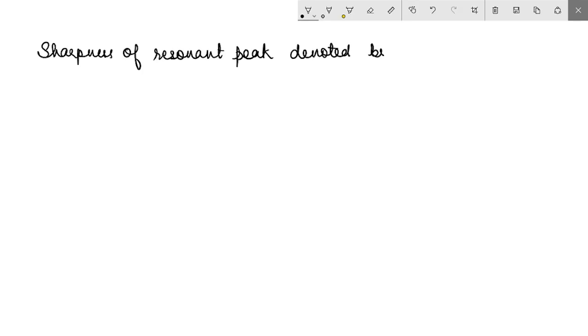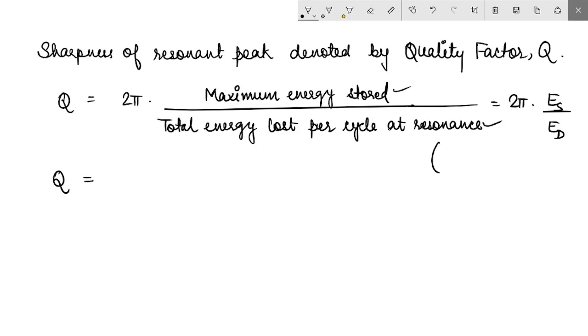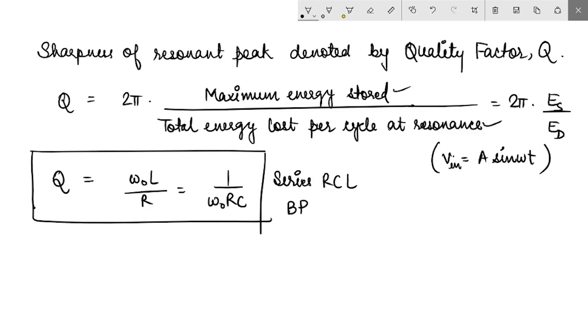Sharpness of resonant peak is denoted by quality factor Q, where Q is defined as 2π times the ratio of maximum energy stored to the total energy lost per cycle at resonance. Without going into the derivation, I can simply write that Q for this RLC circuit would, on simplification and substituting these values for a sinusoidal input signal, say of the form A cos ωt or A sin ωt, would come out to be ω₀L by R or 1 upon ω₀RC. This is the quality factor for a series RLC bandpass filter.